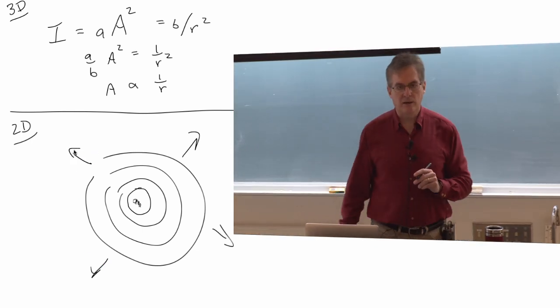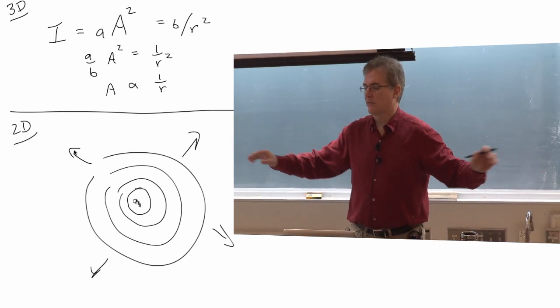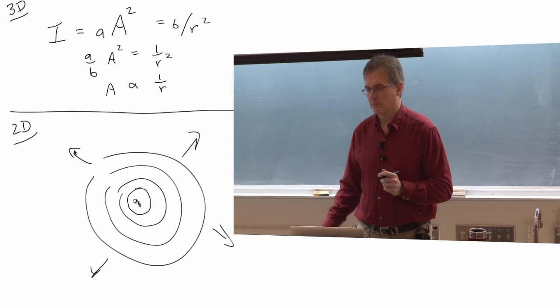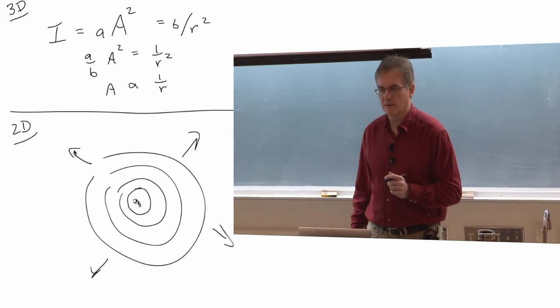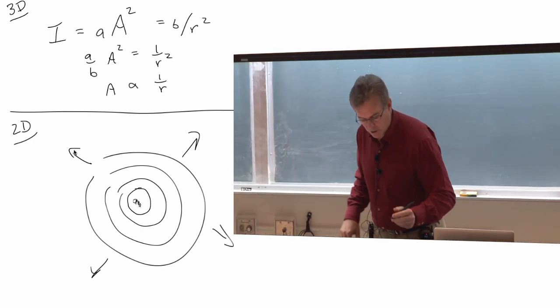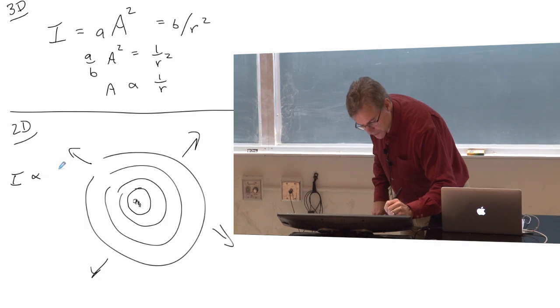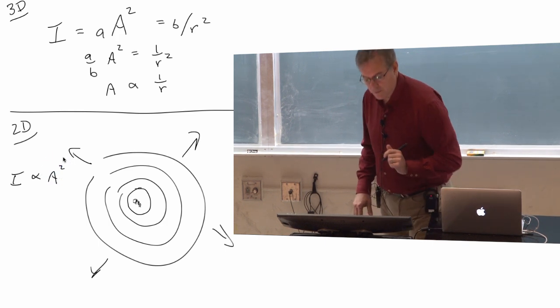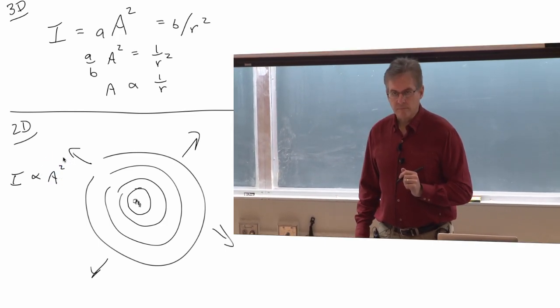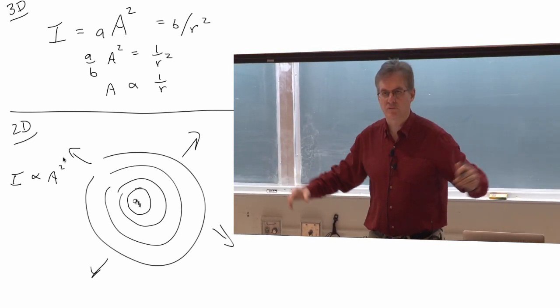Now clearly, the amplitude of these waves is going to decrease as you get farther and farther away from where the splash occurred, right? But how fast is it? Let's do it mathematically. Now we still know that the intensity is proportional to the amplitude squared. But the intensity of these waves now is spread out over larger and larger rings.